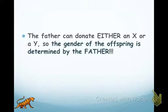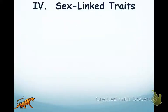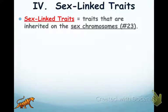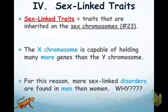So who really determines the sex of the offspring? It's the father. Based on only the sex chromosome in a typical human egg and sperm cell fertilization, the probability of producing a female is 50%. Sex-linked traits are genetic traits that are carried on the sex chromosomes — genes that are on the sex chromosome. Usually when a trait is sex-linked, we're talking about something located on the X chromosome because the X chromosome is larger than the Y chromosome.